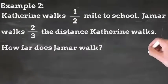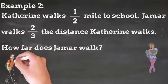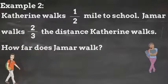Let's check out another example. Catherine walks half a mile to school. Jamar walks 2 thirds the distance Catherine walks. How far does Jamar walk? Okay, so in this problem, I don't know a total, but I do know I'm taking 2 thirds of 1 half, which would indicate multiplication. My expression would be 1 half times 2 thirds.